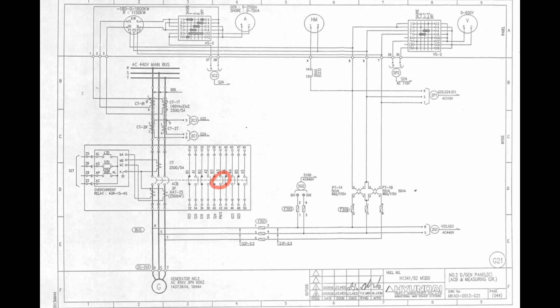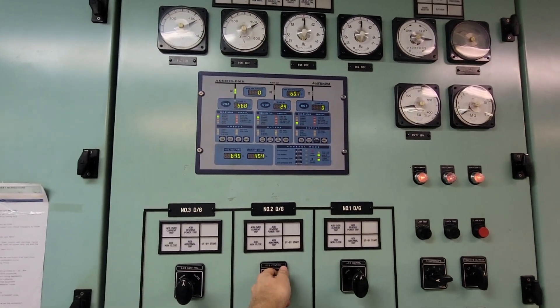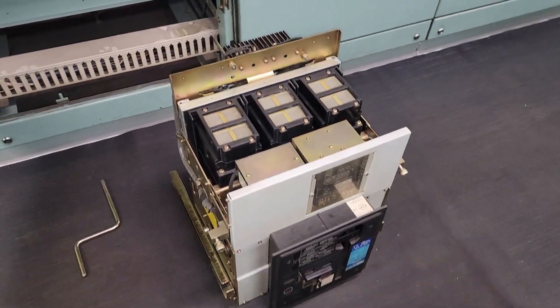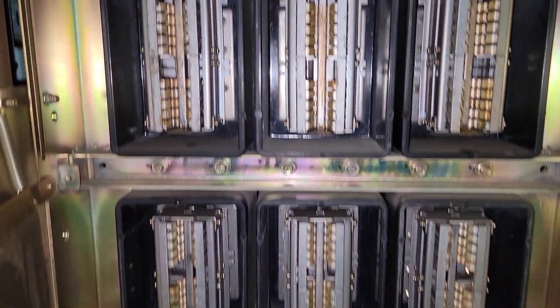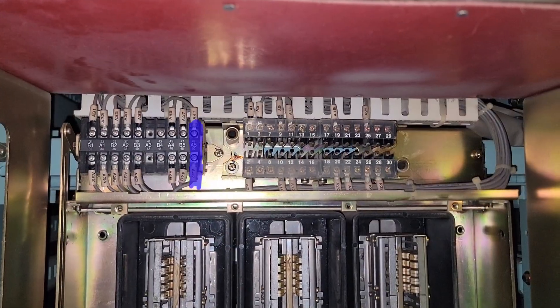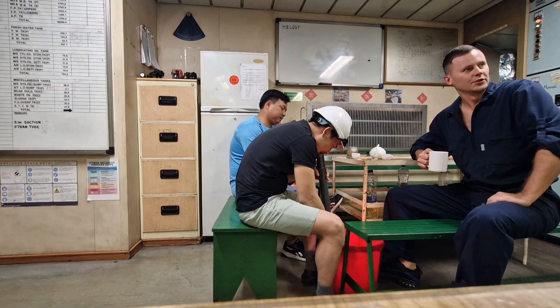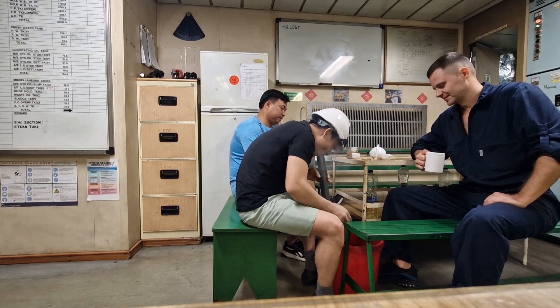Now, in order to fix the problem, we need to find and replace this contact. It is located behind the generator ACB. Switch to manual mode and remove the generator from the bus bars and stop the diesel. Remove the ACB and reconnect this normally open contact to the spare one. When doing this work, do not forget about safety rules and electrical lockout-tagout procedures. Thank you for watching.